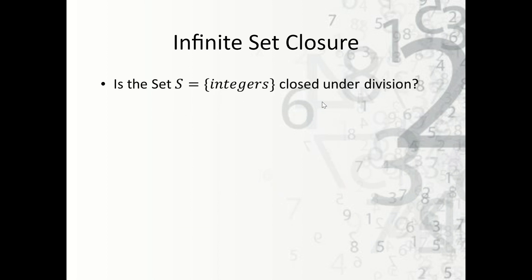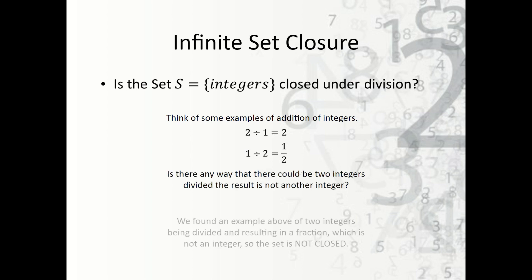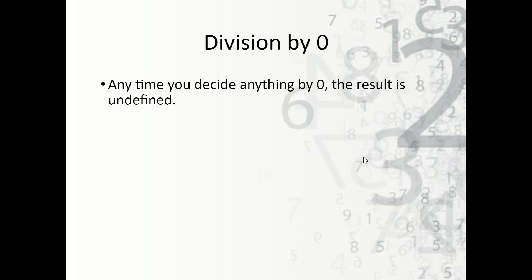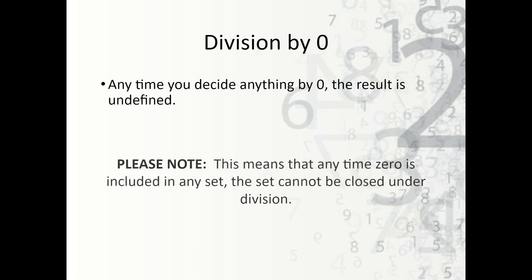Now, what about the set S of integers closed under division? We're going to think of some examples: two divided by one is fine, but one divided by two gives us one half. One half is not an integer — that's a rational number — so therefore the set is not closed. There's also an easier way to tell: if the set includes zero, it is never closed under division because division by zero is undefined. Zero is an integer, so if we were to divide a number in the set by zero it would be undefined, meaning that set would not be closed because of division by zero.